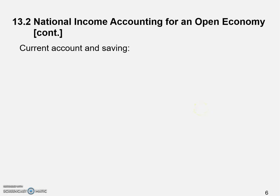Welcome back. Let's continue talking about national income accounting for an open economy. We're going to explore the relationship between the current account and saving. We'll start with the national income account identity, which we already learned in intermediate macroeconomics. On the left-hand side is national output Y, which equals consumption C plus investment I plus government spending G plus exports EX minus imports.